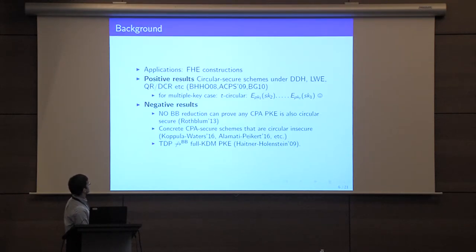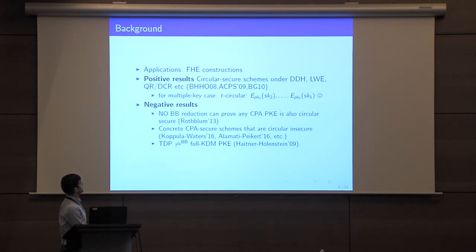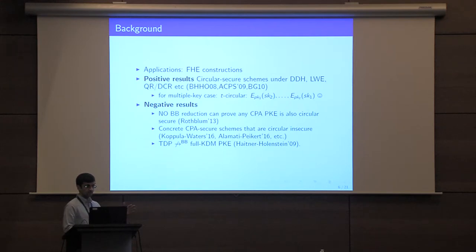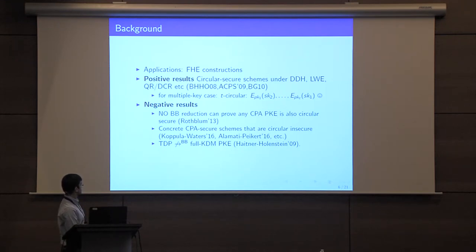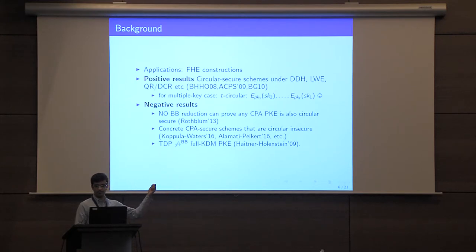In terms of previous works, one of the main applications of circular encryption is in the context of FHE, for converting somewhat FHE into fully FHE. We also have constructions of circular-secure encryption based on various specific assumptions. On the negative side, there is a result by Ross Bloom showing that you cannot use a black box reduction to prove that any CPA bit encryption scheme is also circular secure. This was followed by a series of works giving CPA schemes that are not circular secure in different settings, such as the bit-by-bit setting. There is also a result showing that you cannot go from trapdoor permutations in a fully black box way to a fully KDM public encryption, in which you can securely encrypt any function of the secret key under its public key.